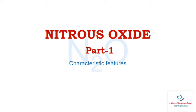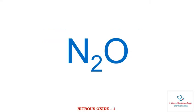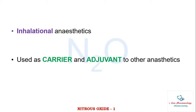Welcome to Isle of Pharmacology. Today in this session you are going to learn about nitrous oxide part 1 — the characteristic features of nitrous oxide. Symbolically, nitrous oxide is represented as N2O. It is an inhalational anaesthetic agent which is used as a carrier and adjuvant to other anaesthetics.